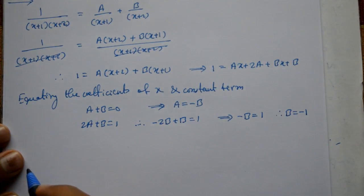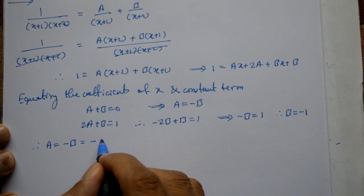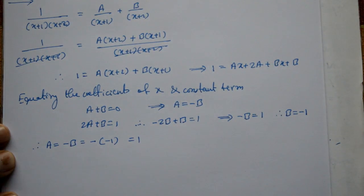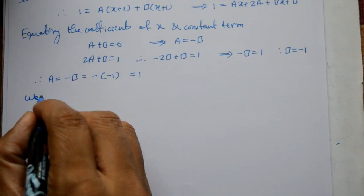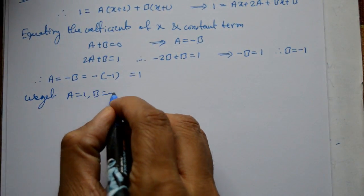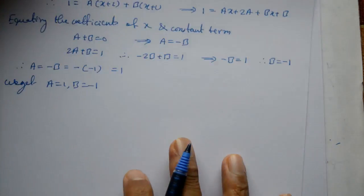B ko either substitute kya hai. Therefore, A is equal to minus B, so minus of minus 1, B value kya minus 1, that is equal to 1. So we get values are A equal to 1 and B is equal to minus 1 ah gaya. Yehi value ko either substitute kya hai.